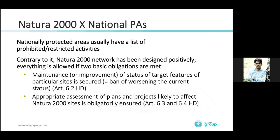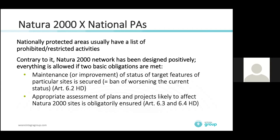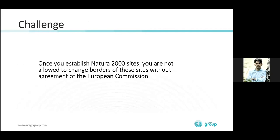The second obligation is that you must assess whether plans and projects could somehow affect Natura 2000 sites. You can permit only those activities that don't have any negative effect. One more very important point: once you establish your Natura 2000 network and the European Commission approves your sites, you are not allowed to change their borders without agreement of the European Commission.